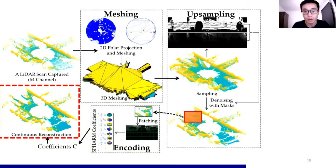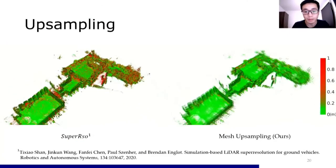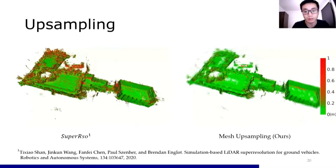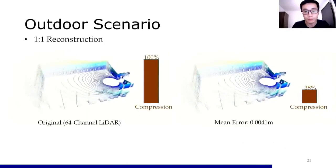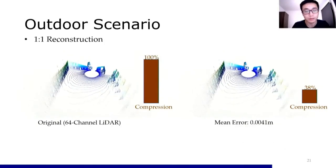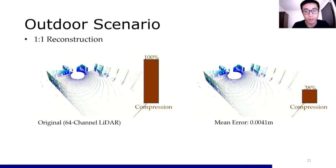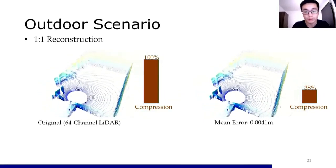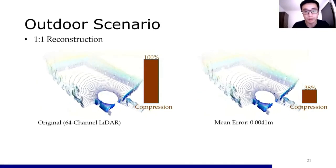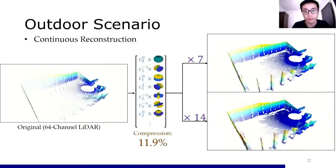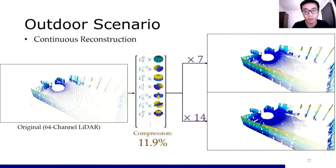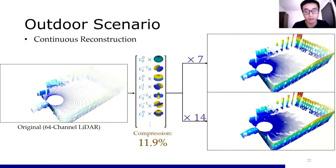With coefficients and masks, we can do continuous reconstruction. The meshing upsampling result shows fewer errors compared with LiDAR super-resolution methods. This is one scan of a 64-channel LiDAR point cloud; the 1-to-1 reconstruction error is at the level of millimeters, lower than the error level of the LiDAR sensor itself. For continuous reconstruction, CURL can produce more than 10 times the points and only takes 11.9% of the original storage space.